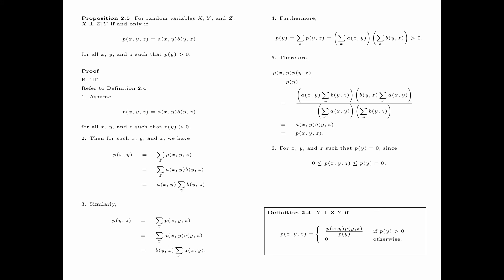Finally, we consider the case that p(y) equals 0. For this case, we observe that p(x,y,z) is lower bounded by 0 and upper bounded by p(y), which by our assumption is equal to 0. Therefore p(x,y,z) equals 0, and this is precisely the second case in Definition 2.4. Hence, we have shown that x is independent of z conditioning on y according to Definition 2.4.